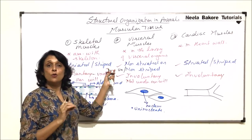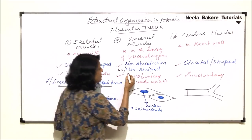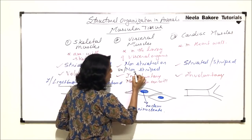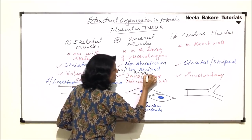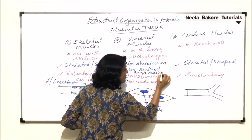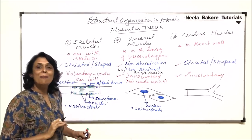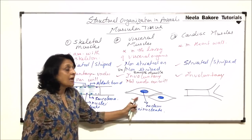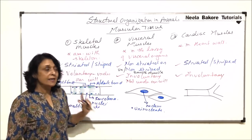Because there is no striation, visceral muscles are also known as smooth muscles, since no bands are visible on them. These cells are uninucleate.